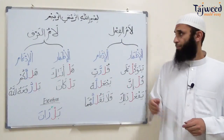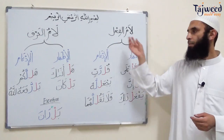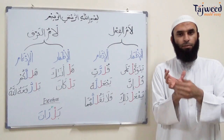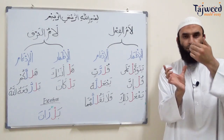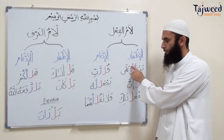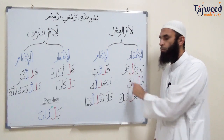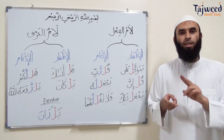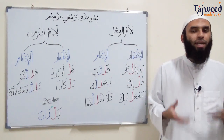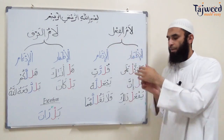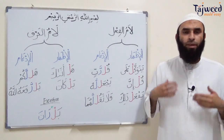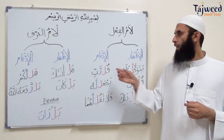Now let's look at لام الفعل and لام الحرف. لام الفعل means اللام الساكنة at the end of the verb - whereas لام التعريف is at the beginning of the noun, لام الفعل is at the end of the verb. For example: يتوكل. If at the end of the verb there's اللام الساكنة followed by any letter except لام and را, we pronounce this لام with الإظهار - clearly. لام الفعل also has two types: الإظهار and الإدغام.